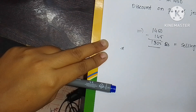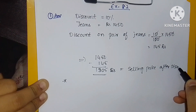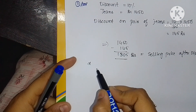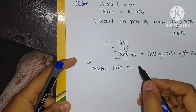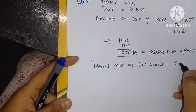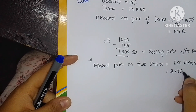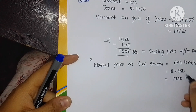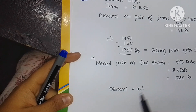Next, the market price of the two shirts is rupees 850 each. Since there are two shirts, 2 into 850 equals rupees 1700.